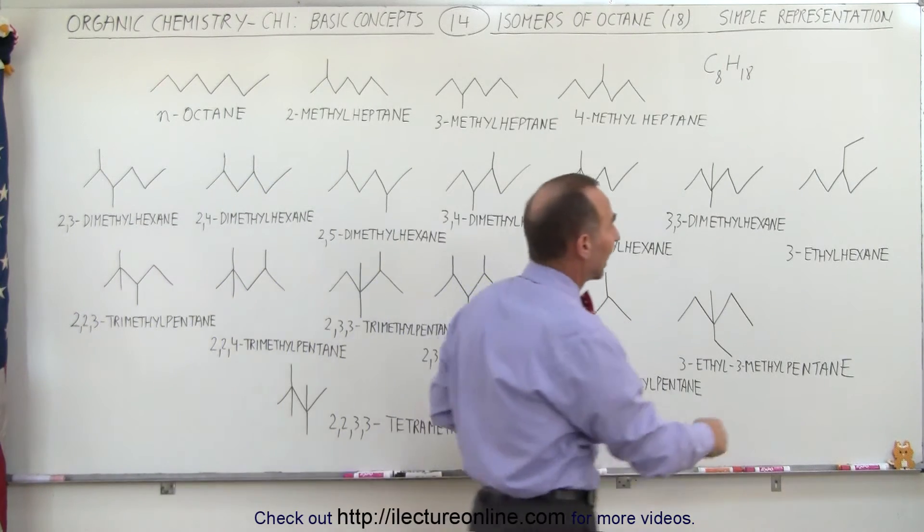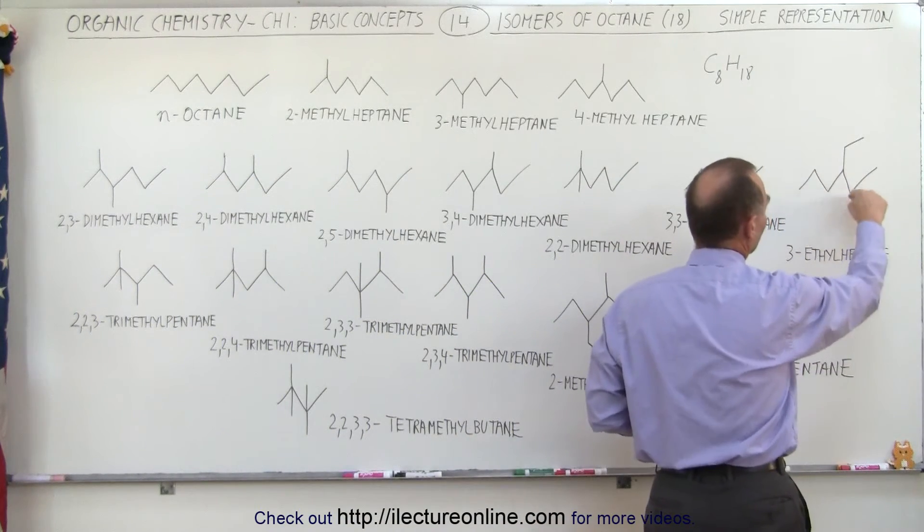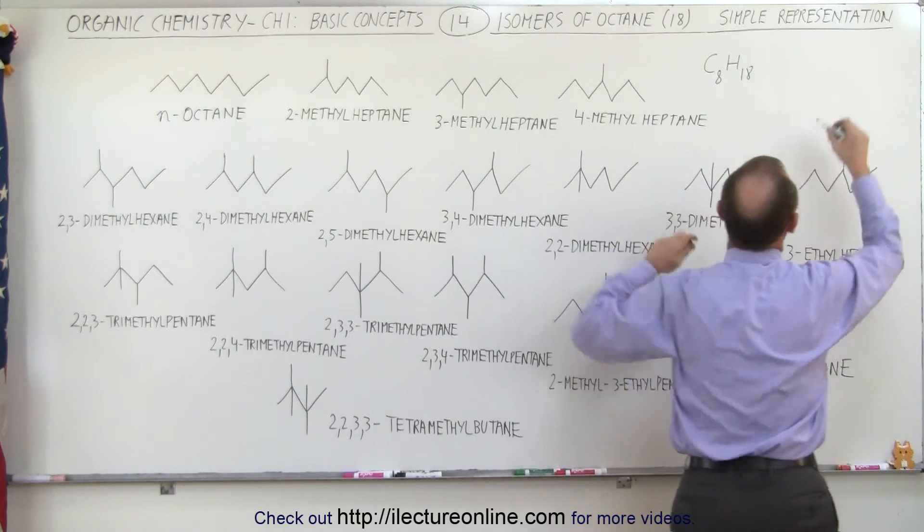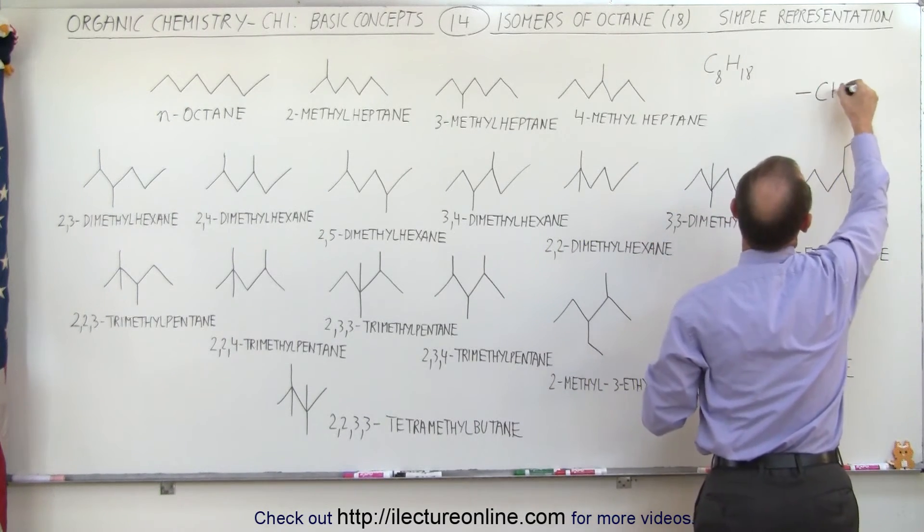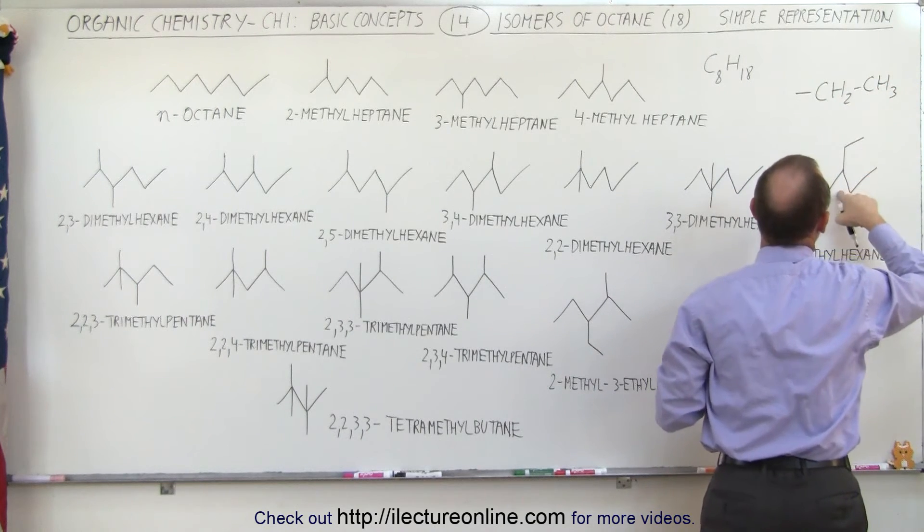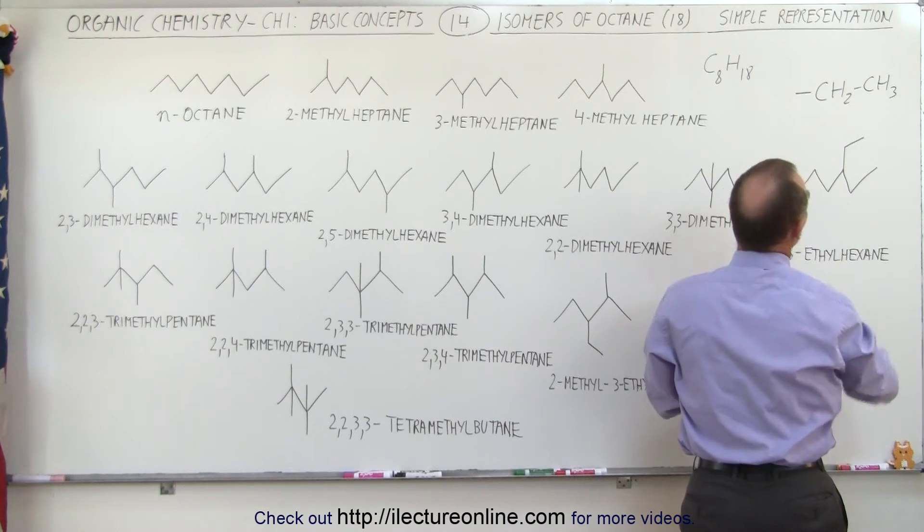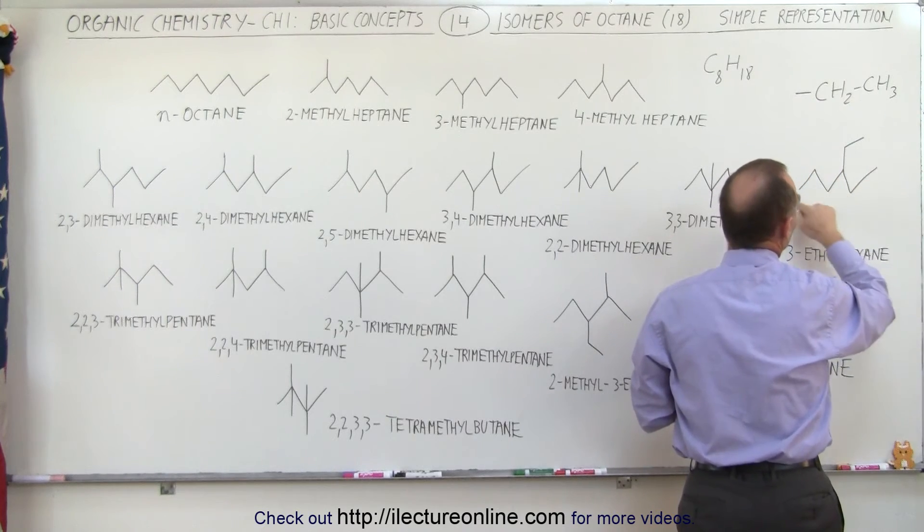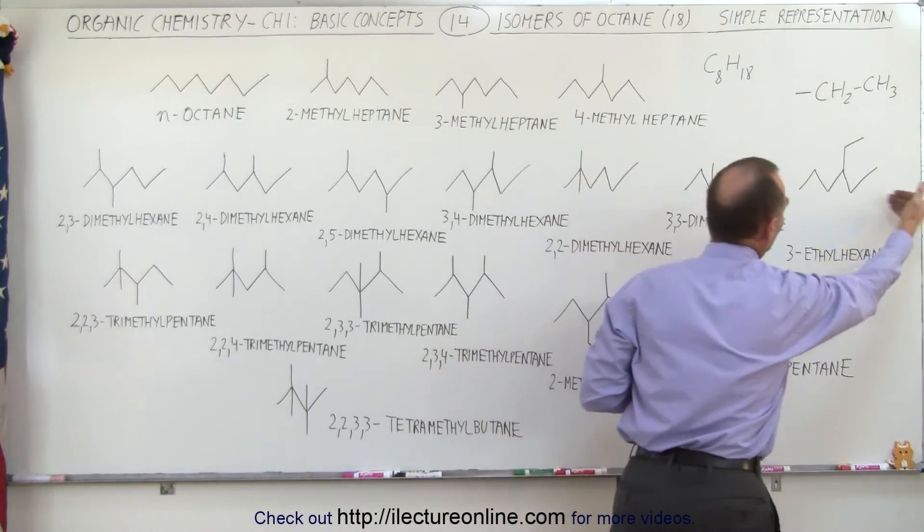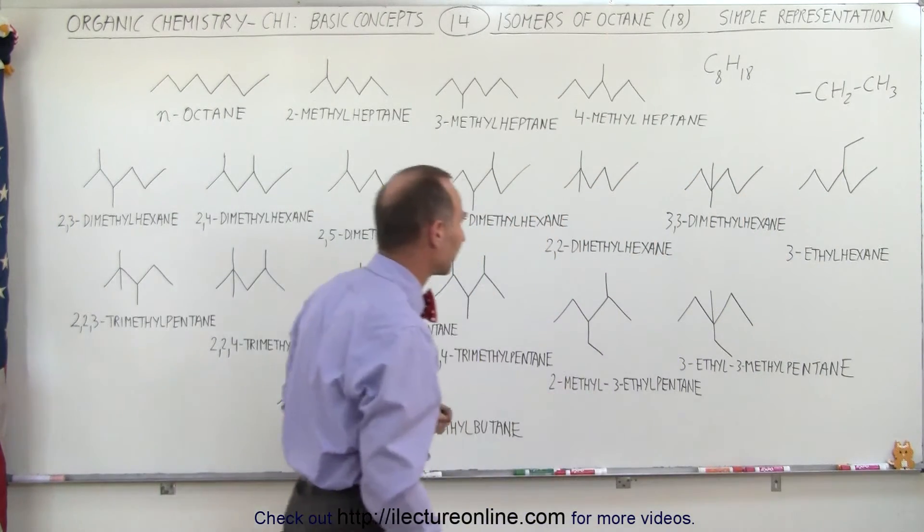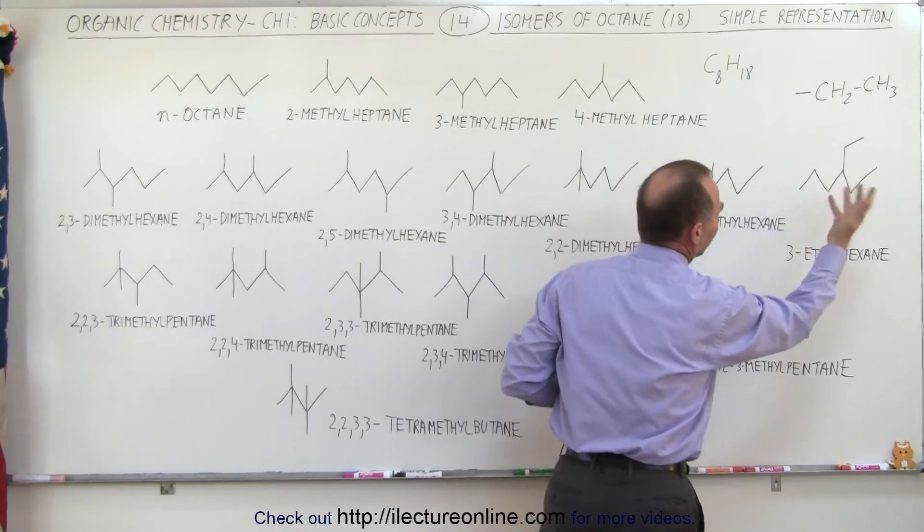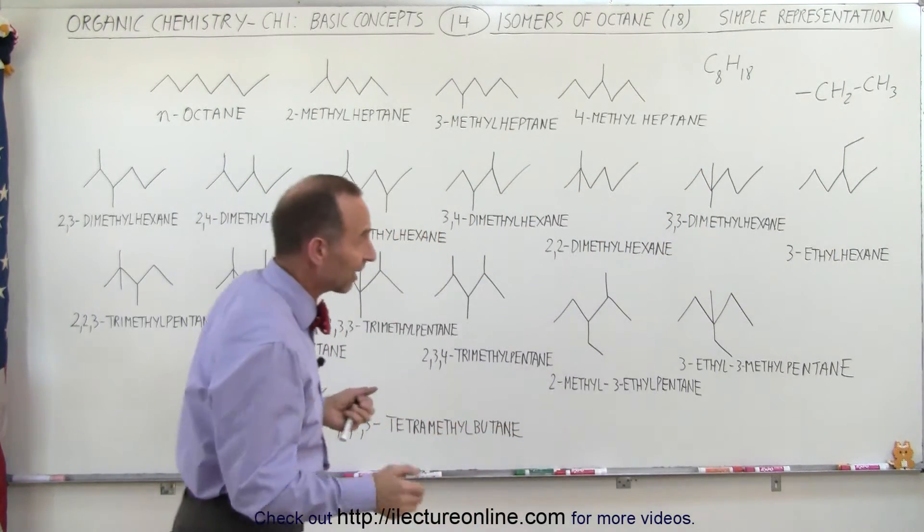The final seventh one is still a hexane because there's six carbons in the chain, but there's a single ethyl group. Remember, an ethyl group is CH2CH3 connected in this case to the third carbon from the right. It's the fourth from the left, but you always indicate the smallest number, so it's the third carbon from the right. I could have drawn it on the third carbon from the left, but it doesn't make any difference—it's the exact same structure.